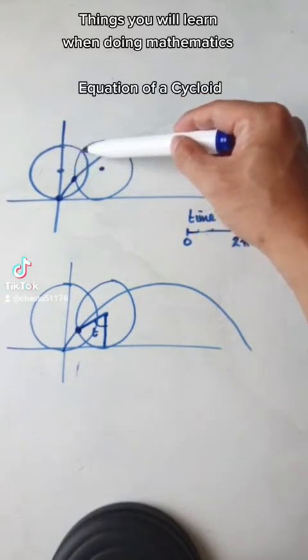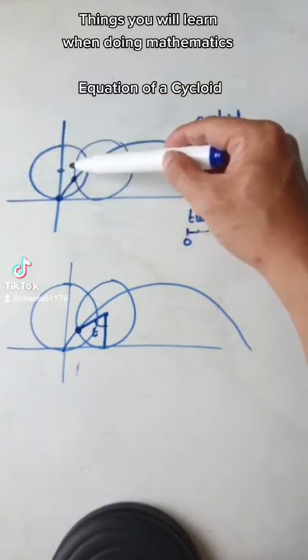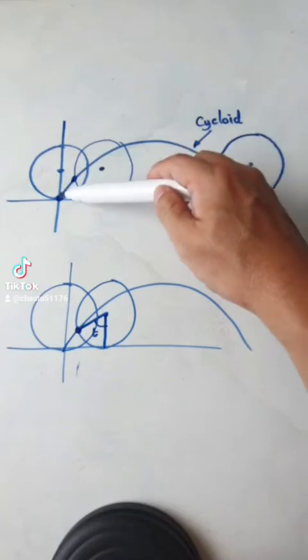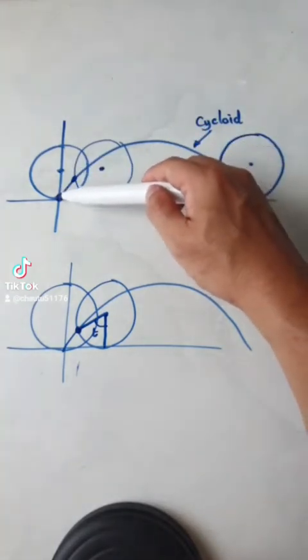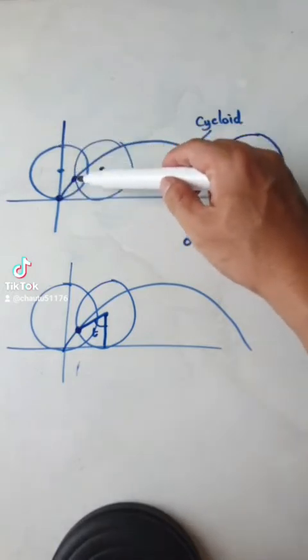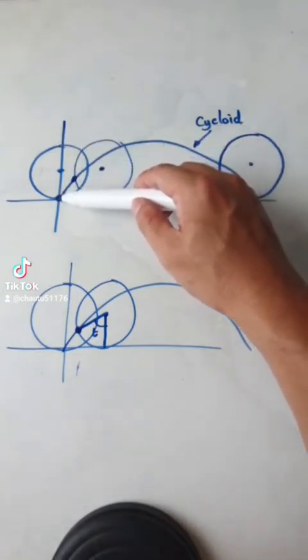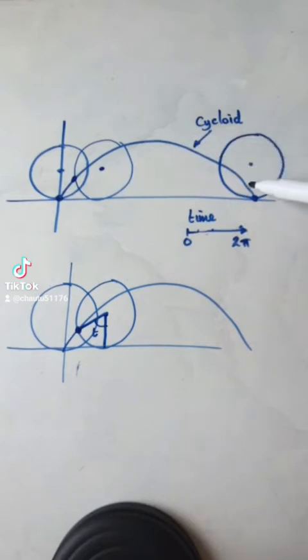So you've got a circle of radius R. Imagine you've got a wheel of radius R, and the wheel is rolling along a table. You're trying to keep track of this one particular point. As the wheel is rotating, this point here will move in this manner. It will follow this path. Well, this path here is called a cycloid.